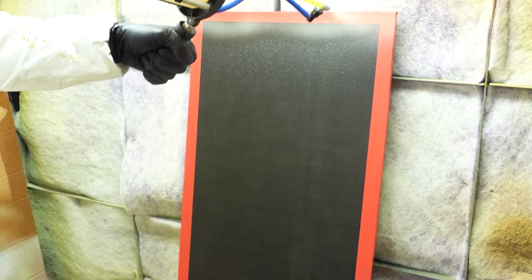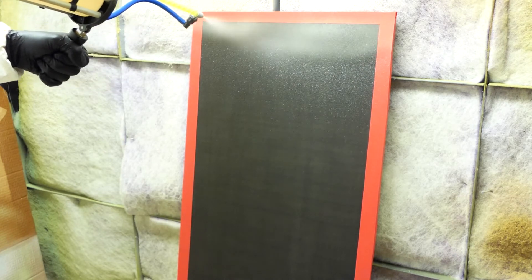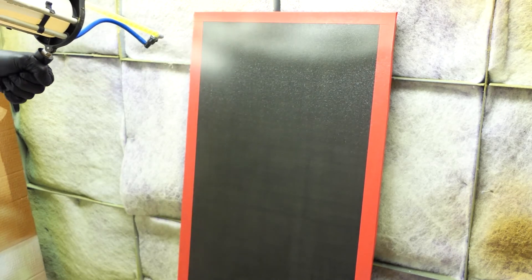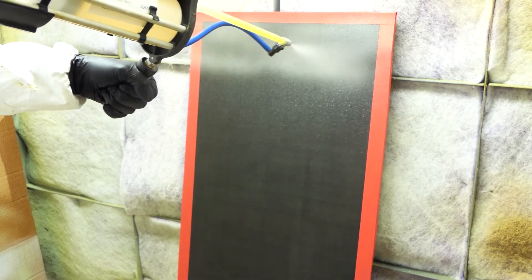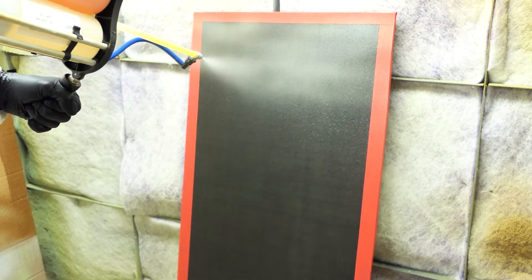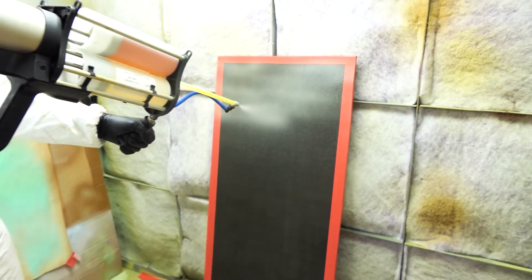The sealant dispenser nozzle should be kept perpendicular to the surface and 1 foot away from the part. Sweep the nozzle smoothly across the surface at approximately 1 foot per second. For best results, spray the entire area without stopping.